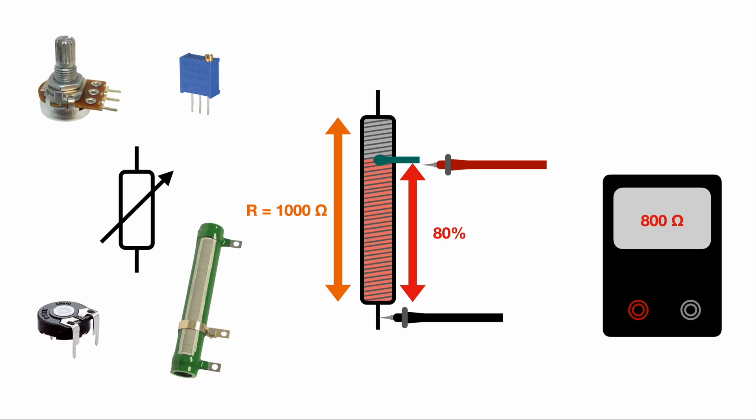The potentiometer itself is of course always having the same resistance, the same total resistance. But by moving the slider, we are accessing or measuring between only a certain part of the whole potentiometer. And so far only measuring a certain percentage, a certain share of the overall resistance of the potentiometer.